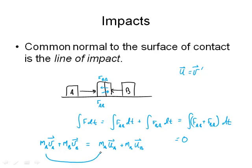Plus the mass of B times U_B. Now, I am not saying the momentum of A is the same before and after, and the momentum of B is the same before and after, although that is possible. What I am saying is the total momentum, A plus B, before the impact equals the total momentum, A plus B, after the impact. That's conservation of momentum.